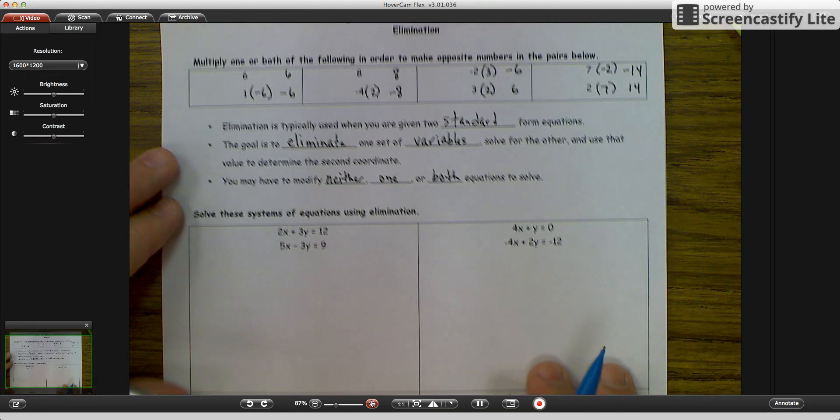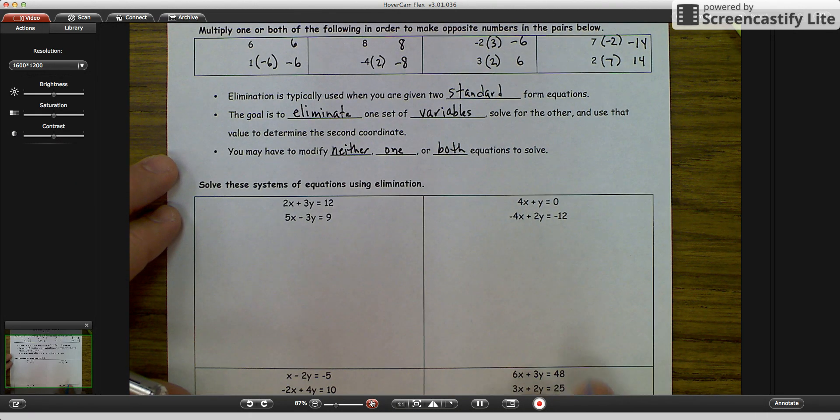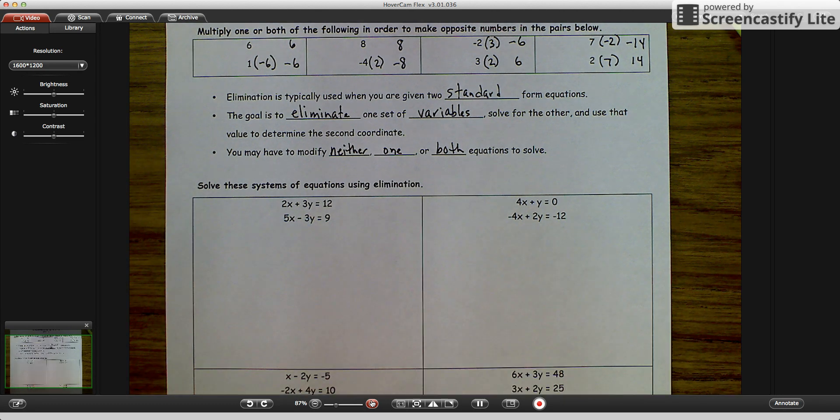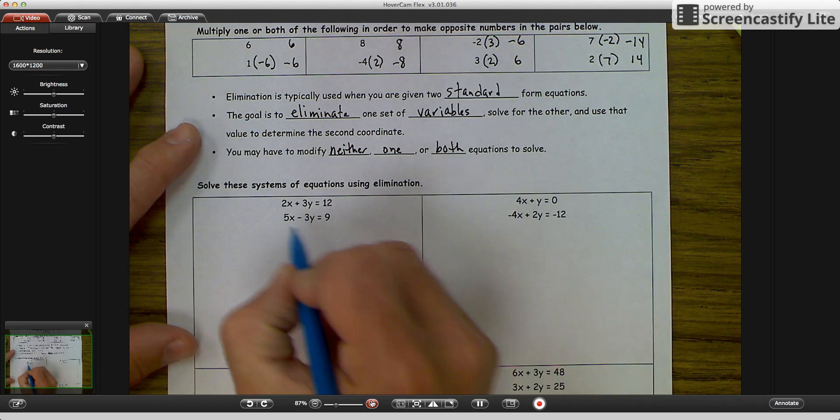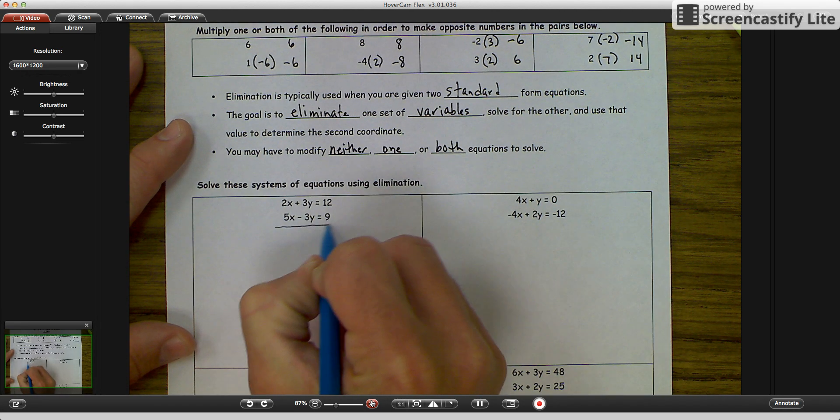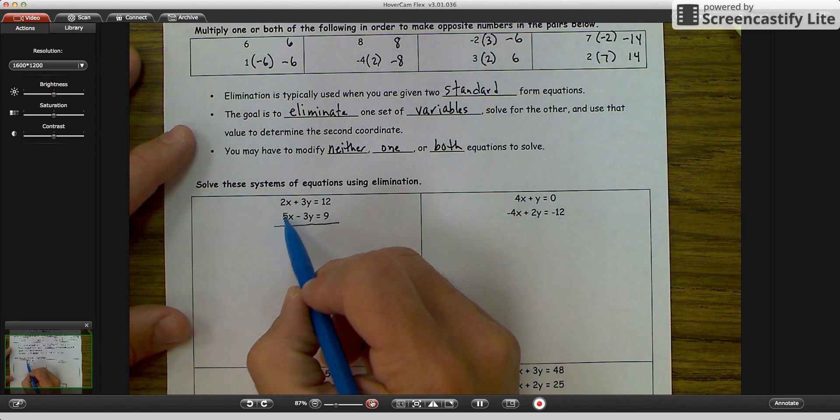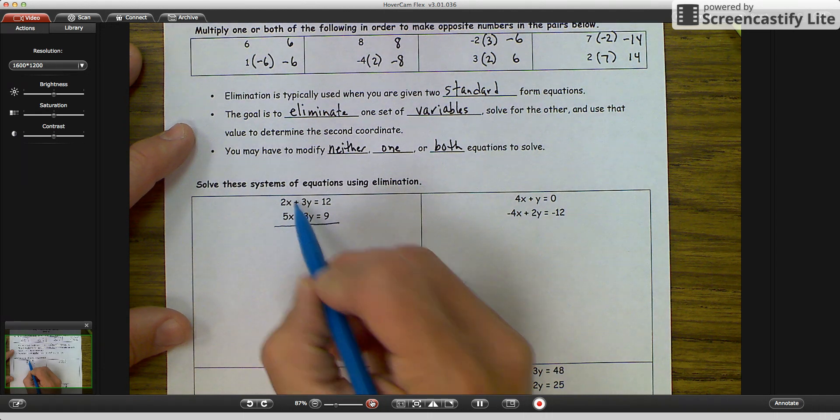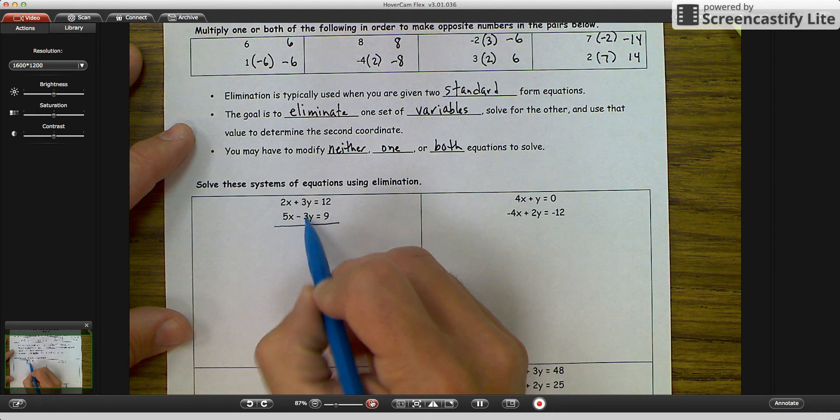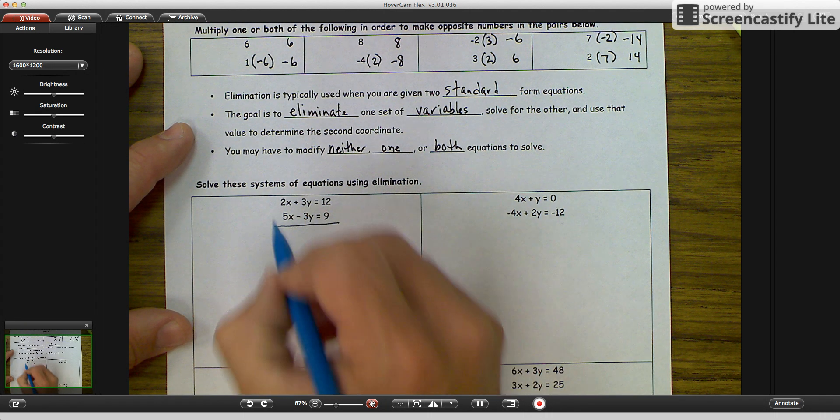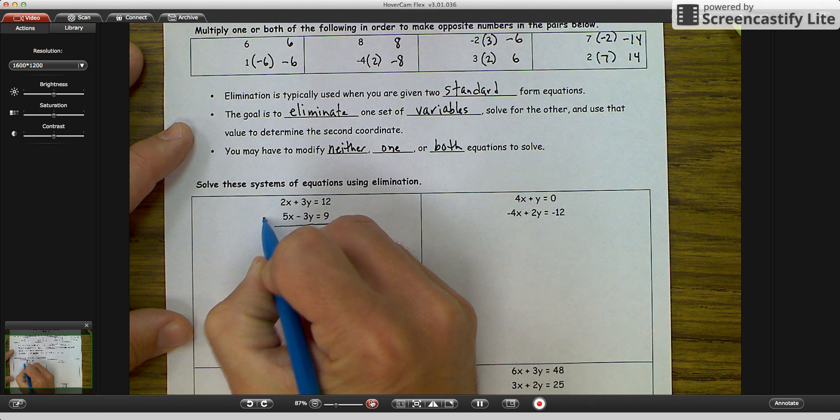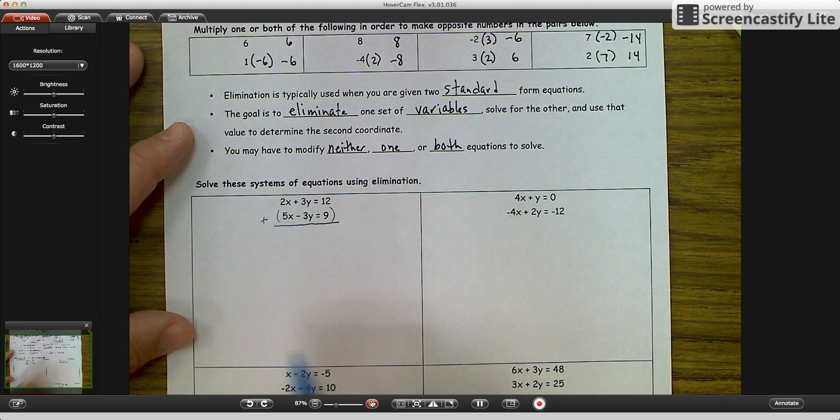The first example says 2x plus 3y equals 12, and 5x minus 3y equals 9. So what we are looking for is we are looking for opposites in either the x's or the y's. Positive 2, positive 5, they are not opposites. Positive 3y, negative 3y, these are opposites.